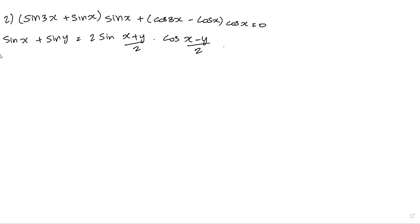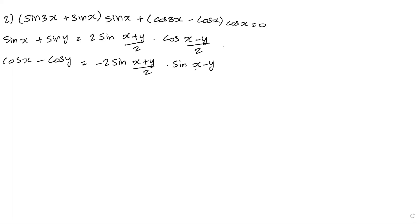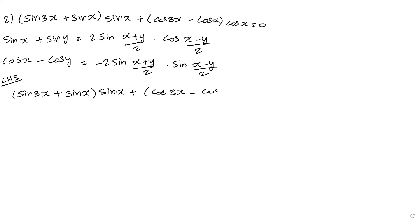Next is cos x minus cos y. Cos x minus cos y equals minus 2 sin of (x plus y divided by 2) into sin of (x minus y divided by 2). That is the proof. LHS: sin 3x plus sin x into sin x, plus cos 3x minus cos x into cos x.